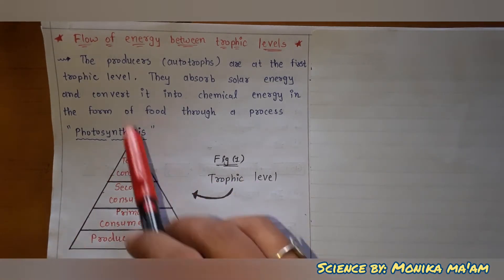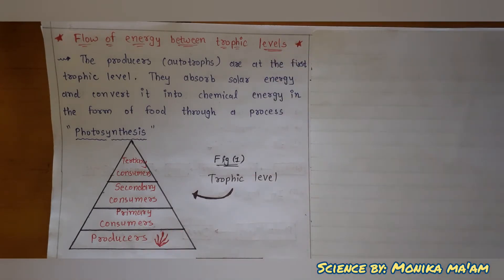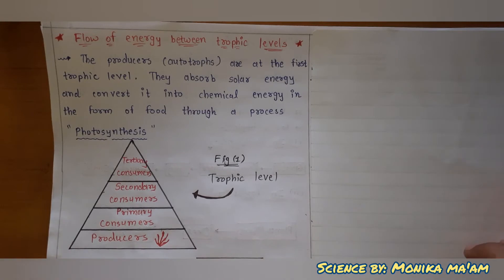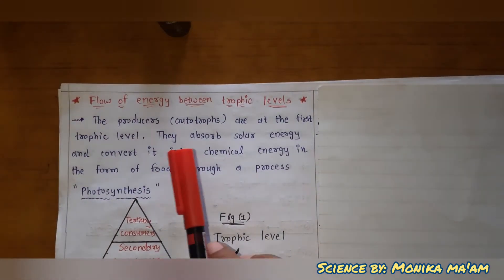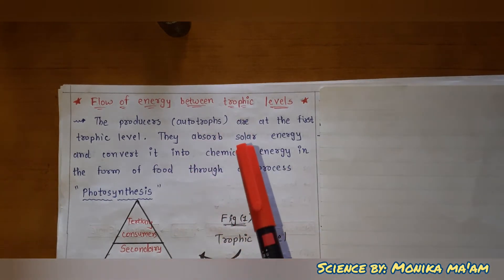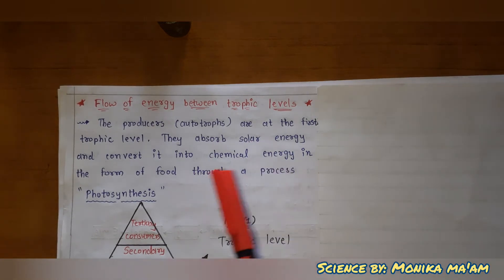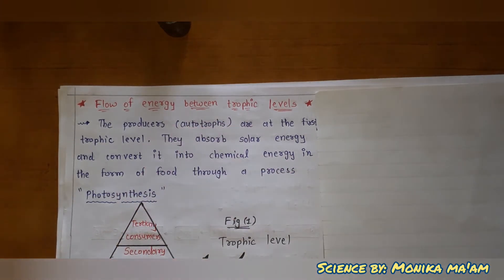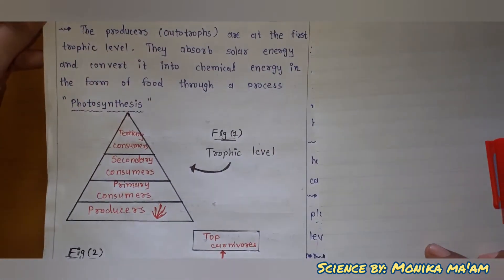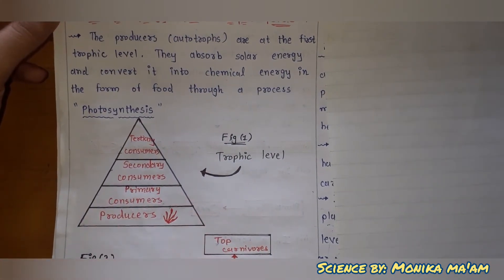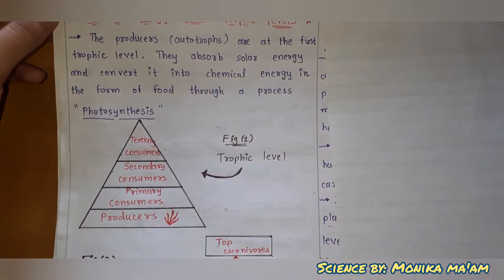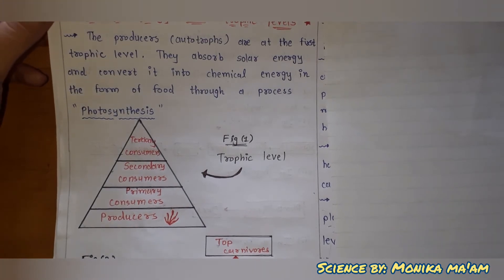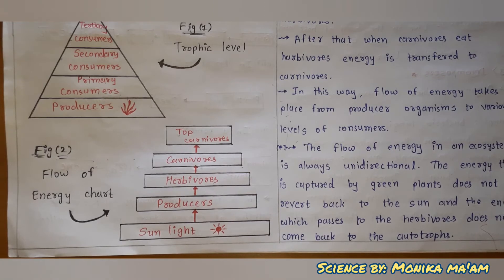The figure you can see shows trophic levels. The energy that is transferred step by step is called the trophic level, and this is its figure. The producers, which are autotrophs, do not depend on anyone else. Green plants are at the first trophic level — they absorb solar energy and convert it into chemical energy in the form of food through the process of photosynthesis. After producers come primary consumers, then secondary consumers, and then tertiary consumers. In this way energy flows through the trophic levels.